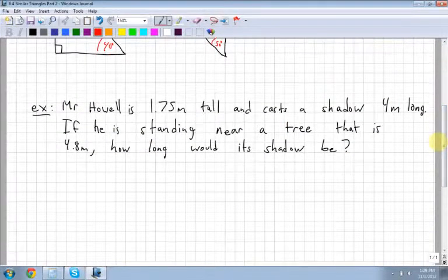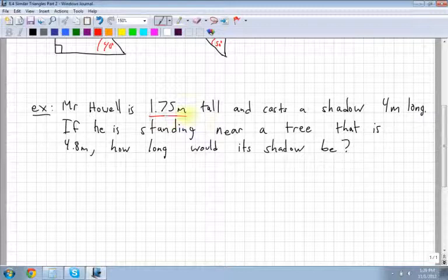Last example, Mr. Howell is 1.75 meters tall. Is this accurate? I'm not sure. And casts a shadow of 4 meters long. So let's try this here. Here I am, over here, and I cast a shadow that is 4 meters long.